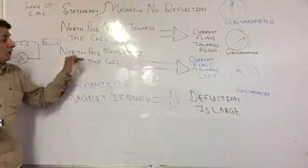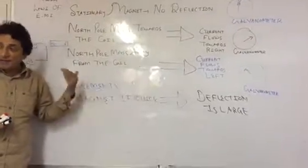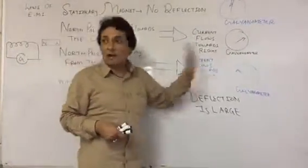Second observation: the north pole moves away from the coil. When the north pole moves away from the coil, when it goes far from the coil, then current flows towards left.